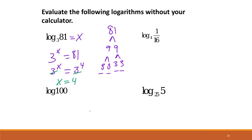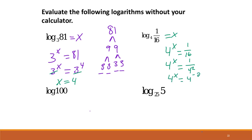We can do the same on the next one. We have 4 to the x equals 1/16. The square root of 16 is 4, so 4 squared gives us 16. Since we have 1/16, we rewrite this as 4 to the x equals 1 over 4 squared, because a negative exponent drops it to the bottom. So 4 to the x equals 4 to the negative 2, giving us x equals negative 2.